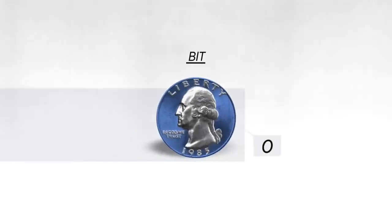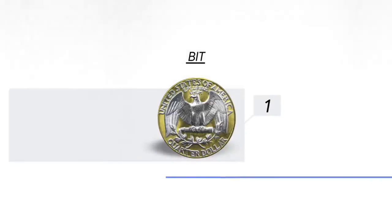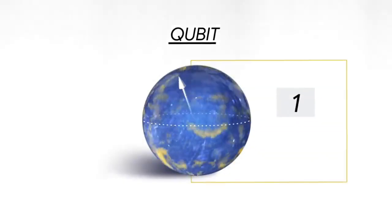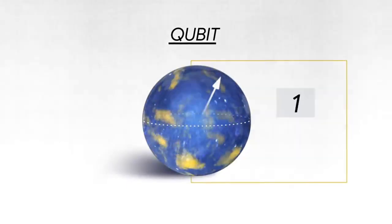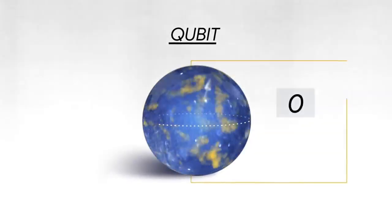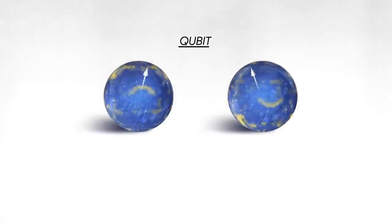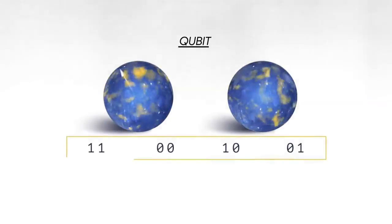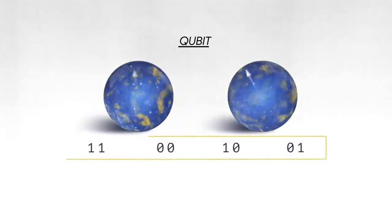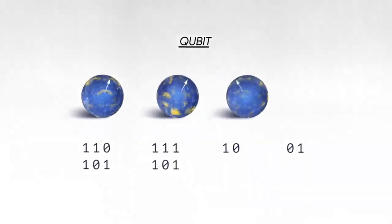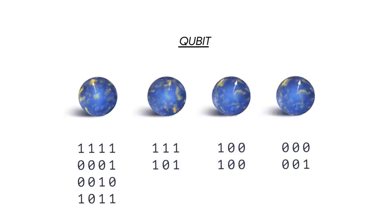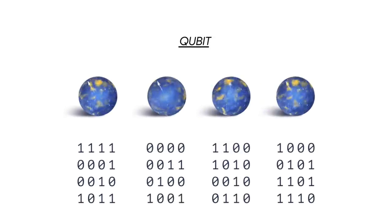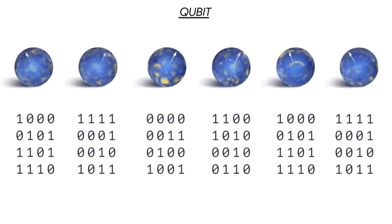The classical bit stores information as a zero or one, and a quantum bit can be both zero and one at the same time. If you have two quantum bits, there are four possible states you can put in superposition. With three qubits it's eight, four qubits it's 16. It grows exponentially.